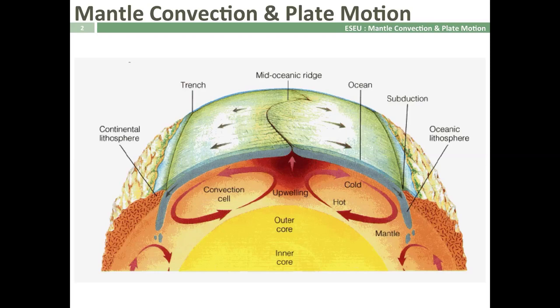This is our conventional view of mantle convection. The mantle is heated from below, becomes less dense, rises, spreads out across the surface dragging the oceanic plates with it, cools and descends back into the mantle creating the convection cell. So we've got this view that plate tectonics is driven by circulating convection cells within the mantle.